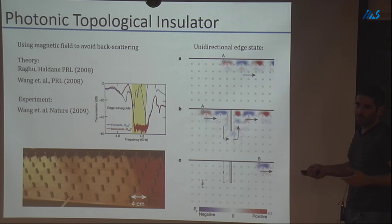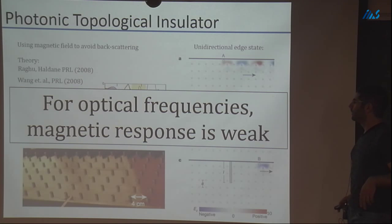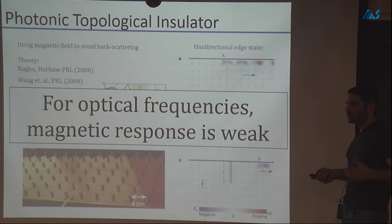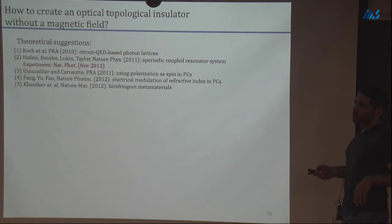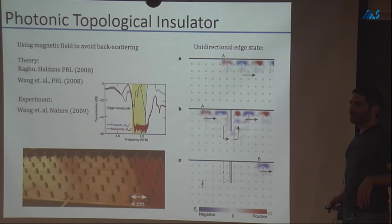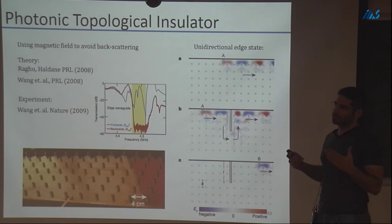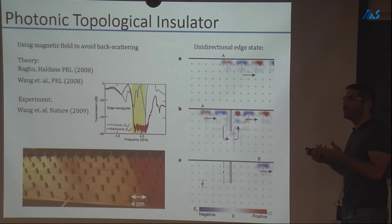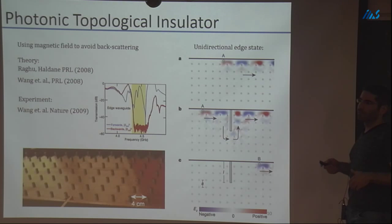One can ask: why not build the same system at optical frequencies? However, for optical frequencies the magnetic response is weak — we cannot find materials with very strong magnetic response for optical frequencies, so we cannot break time reversal symmetry in this fashion. Why is it called topological? Because it's related to the symmetry of the problem. You really need to mess up with the bulk in order to break these properties — you need to introduce energies that can bridge across the gap.